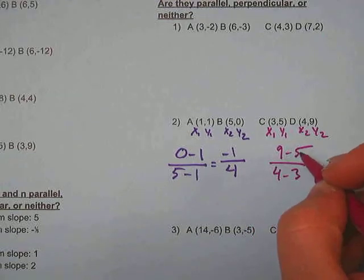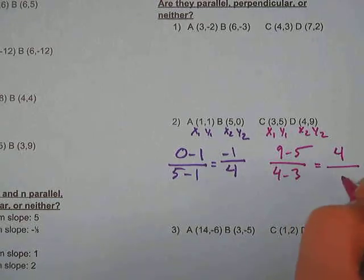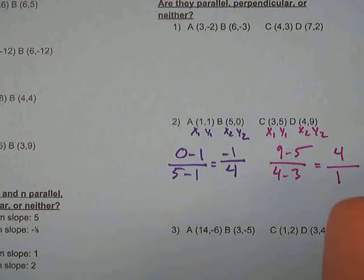9 minus 5 is 4, 4 minus 3 is 1. So this slope is 4 over 1, which is the same thing as 4.